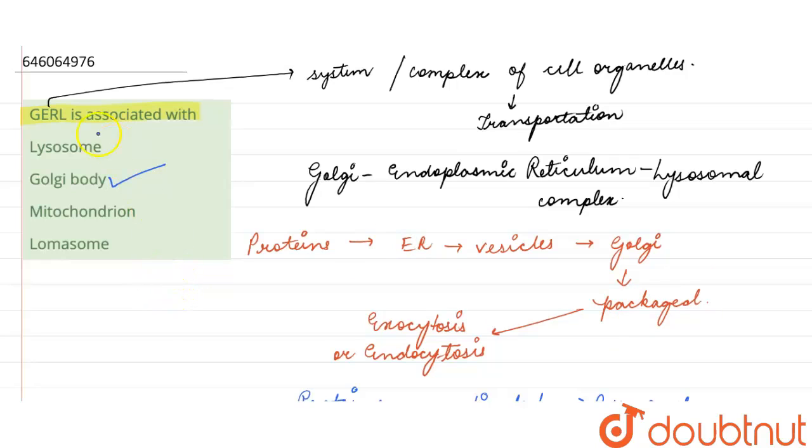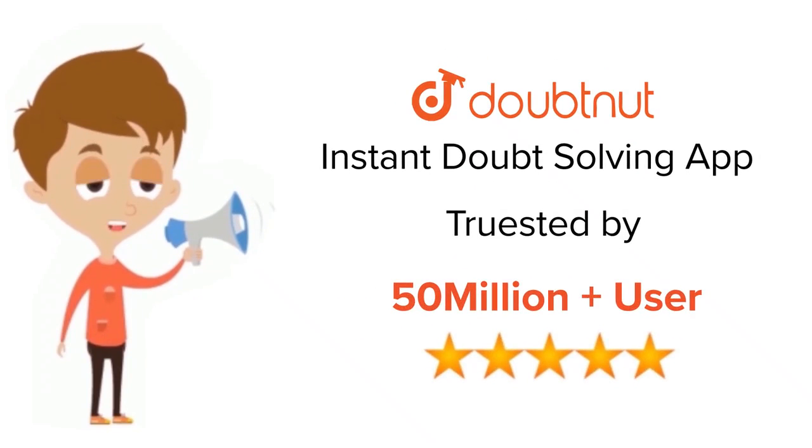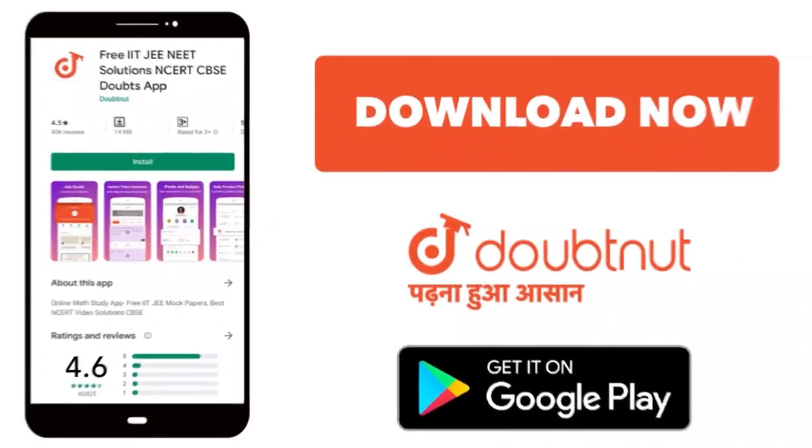Lysosome is the end step for this complex, so we will not mark that. Mitochondrion does not take part in the Golgi endoplasmic reticulum lysosomal complex, so this is also incorrect, and lomasome is also incorrect. The correct answer is option two. Thank you. For class six to twelfth, IIT-JEE and NEET level, trusted by more than five crore students, download Doubtnut app today.